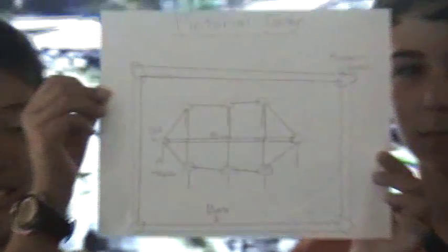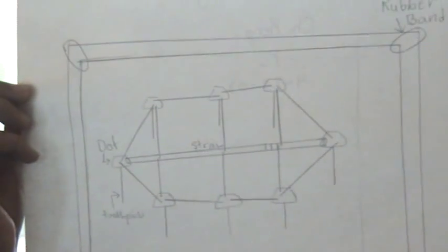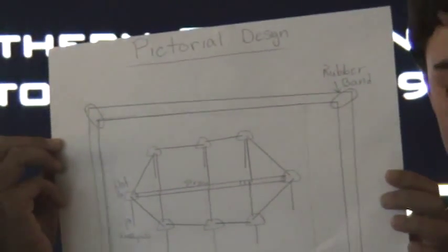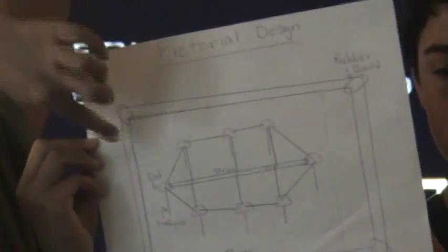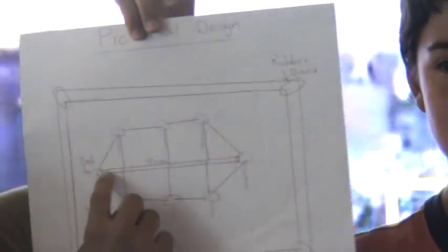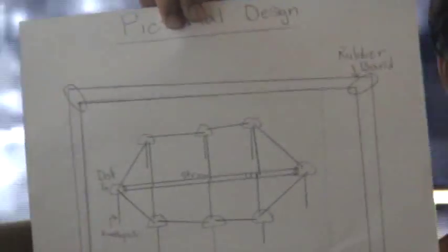This is our pictorial design. Here it shows how the rubber bands keep the platform stable and still able to move. The dots help it stay together and the straw connects the ends. But it didn't really turn out as we planned.